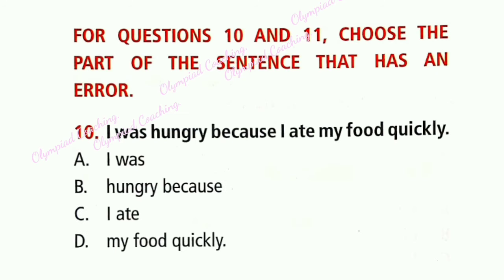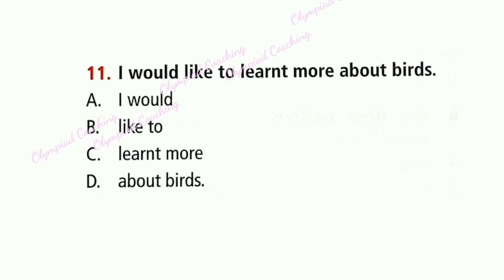For questions 10 and 11, choose the part of the sentence that has an error. Question 10: I was hungry because I ate my food quickly. Option B is correct: 'hungry because' is the error. The correct answer is: I was hungry, so I ate my food quickly. Question 11: I would like to learn more about words. Option C is correct: 'Learn more' is the error. The correct answer is 'to learn.'